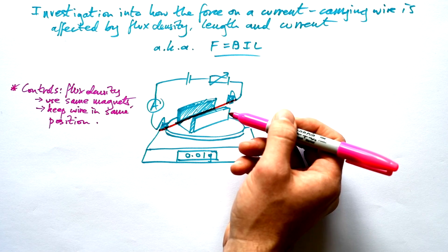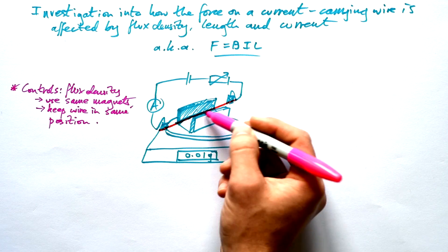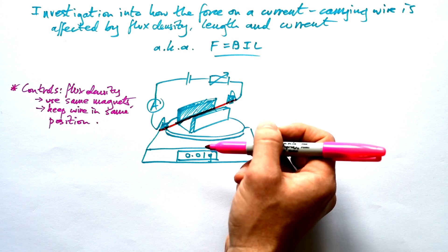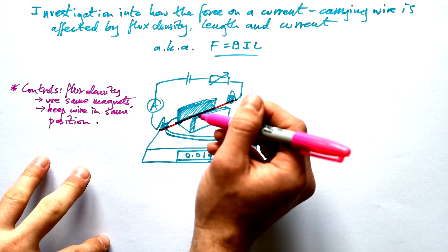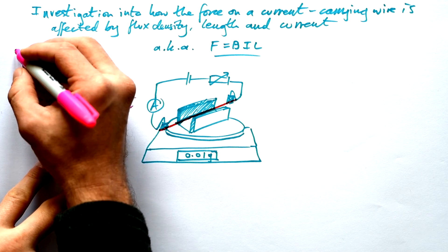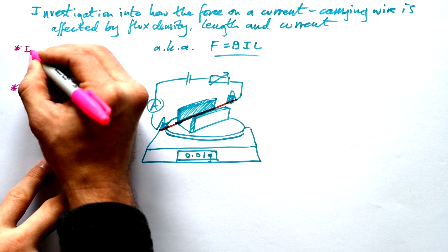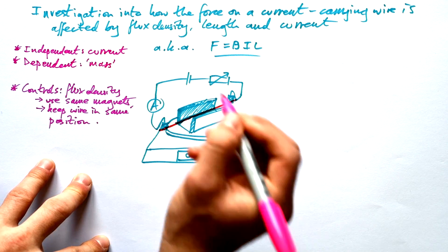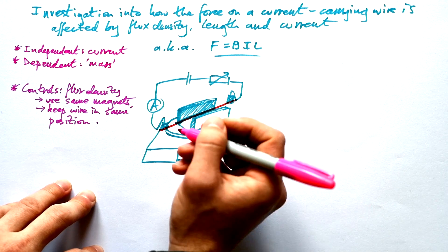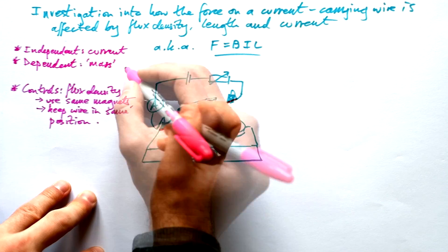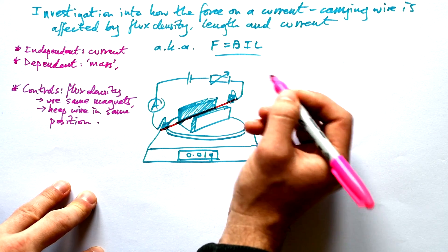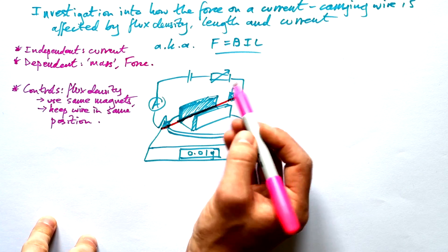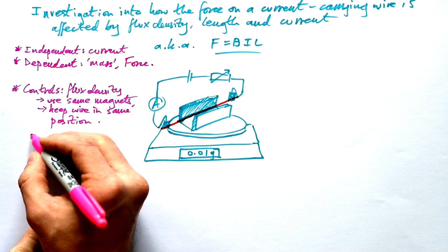So what do we want to change? Well we could change the length by moving the crocodile clips up and down the wire and then measuring the distance in between the crocodile clips. But the easiest thing is to change the current. So we're going to say that our independent variable is the current. Dependent, well it's the reading on our balance but it's not actually a real mass. It's a simulated mass and so therefore we can say the mass recorded by the balance and therefore that allows us to find out the force. So because we're going to be changing current we're going to keep the length the same.